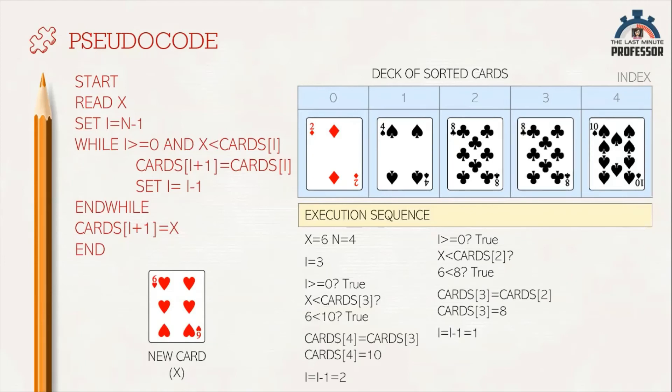Again, we need to check the condition. Is 1 greater than or equal to 0? Yes. Is the value of x less than cards[i]? Is x less than cards[1]? Is 6 less than 4? No. That becomes false. So the statements inside while will not get executed and the control comes out of the while loop to the statement after that.